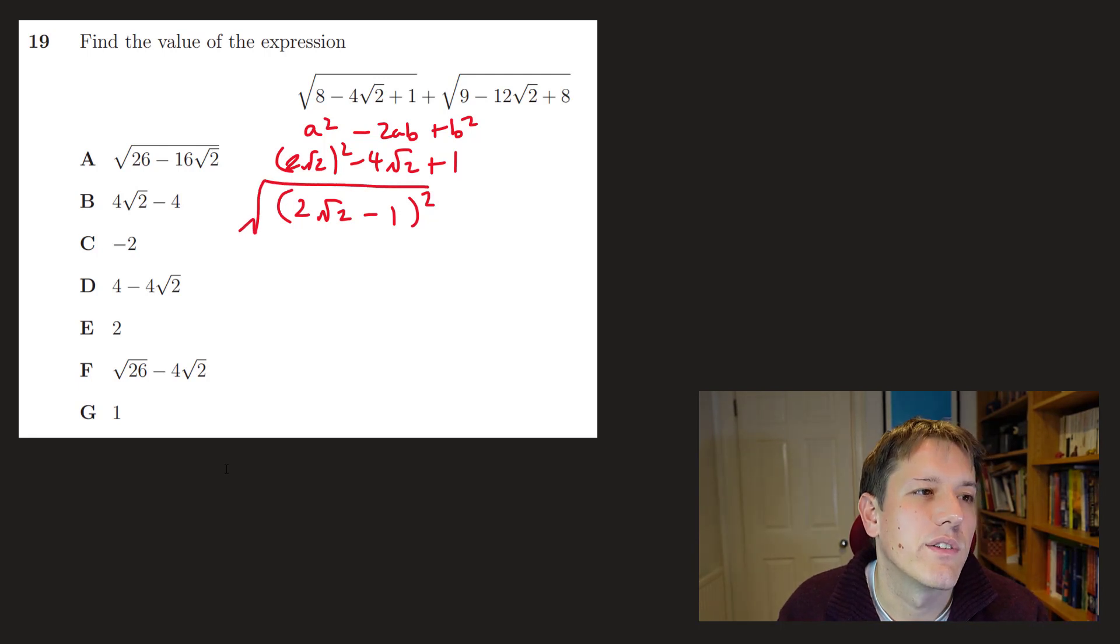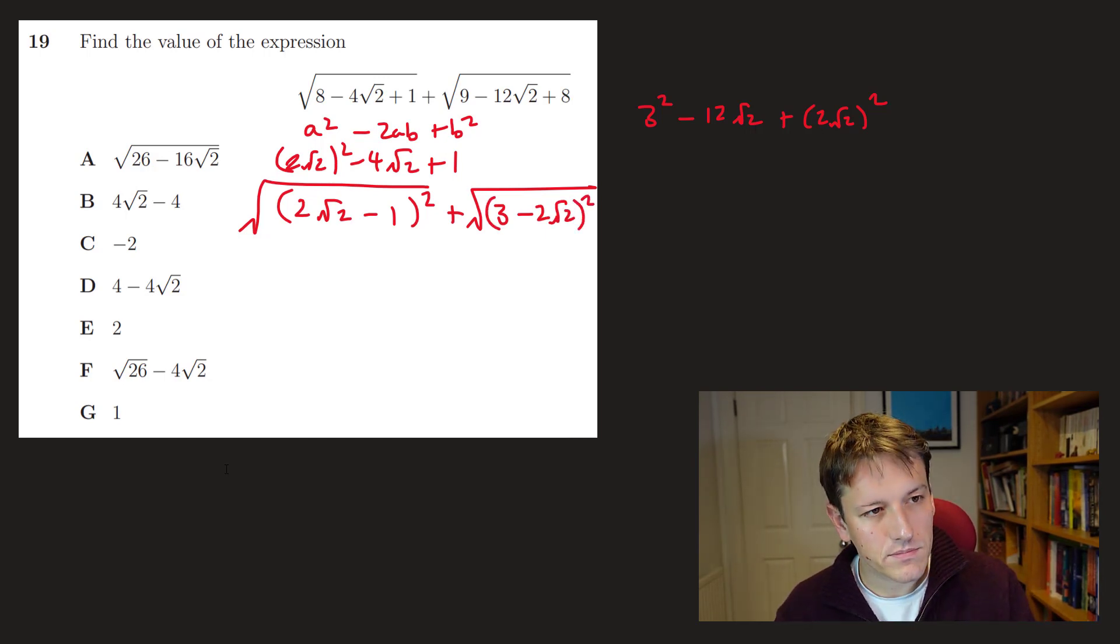So I could think of this first one as 2 root 2 squared minus 4 root 2 plus 1, and then it doesn't take too much of a leap to realize that this is 2 root 2 minus 1 all squared, because it's in the form a squared minus 2ab plus b squared. Right, so actually this first one is the square root of 2 root 2 squared minus 1, and then we try and do the same for the other one here, and this time I've got 3 squared minus 12 root 2 plus 2 root 2 squared, and again we can just see that that's 3 minus 2 root 2 all squared.